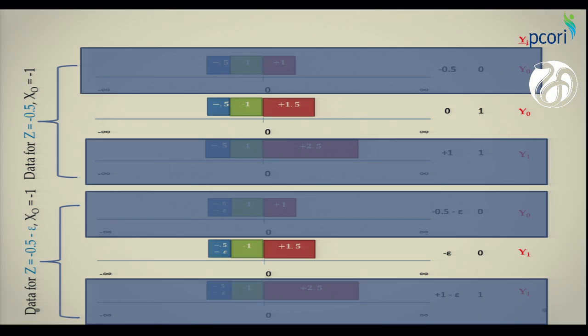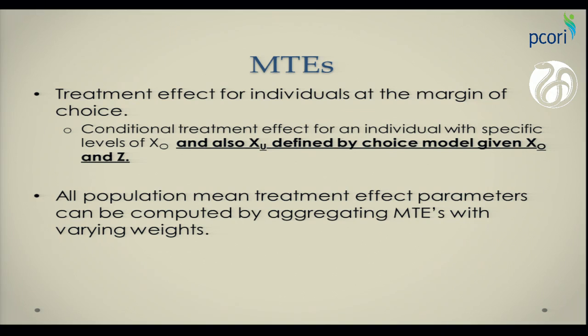You can point identify the hypothetical patient for whom you're estimating a treatment effect, and that's the marginal treatment effect concept. Now, once you get your marginal treatment effect, and you can get your marginal treatment effect condition on various levels of observed and unobserved characteristics, then you can answer pretty much lots of questions in the parameter space. You can use this, as I said, the marginal treatment effect is a conditional treatment effect of an individual with specific levels of your observed characteristics, but also a specific level of unobserved characteristics that is defined by the choice model, given your observed instrument and observed characteristics. Once you get your MTEs, you can aggregate across various populations to give your treatment effect parameter, average treatment effect, or a treatment effect on the treated.